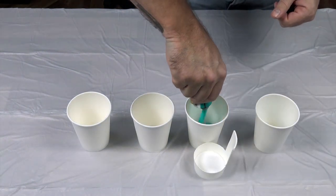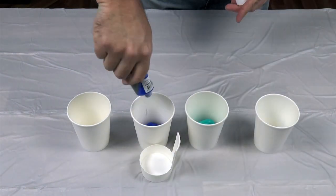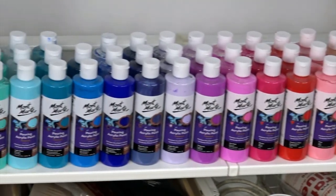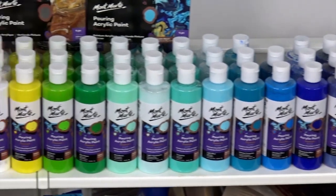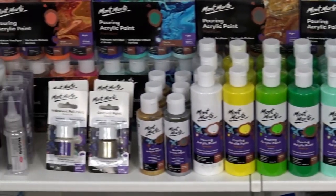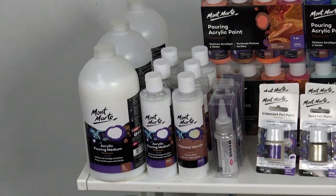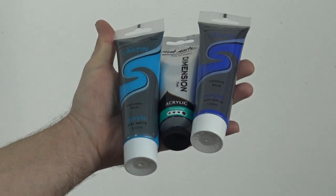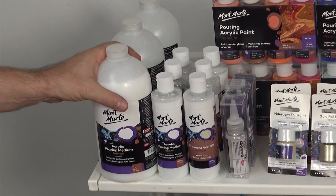We're using Satin Series for all the paint except turquoise which is from the Dimension acrylic range. Montmartre also offers a great range of pre-mixed pouring paints that are ready to use which would make this project even easier, but I'll be using regular acrylics today so I can show you how to mix your own paint using the Montmartre pouring medium.